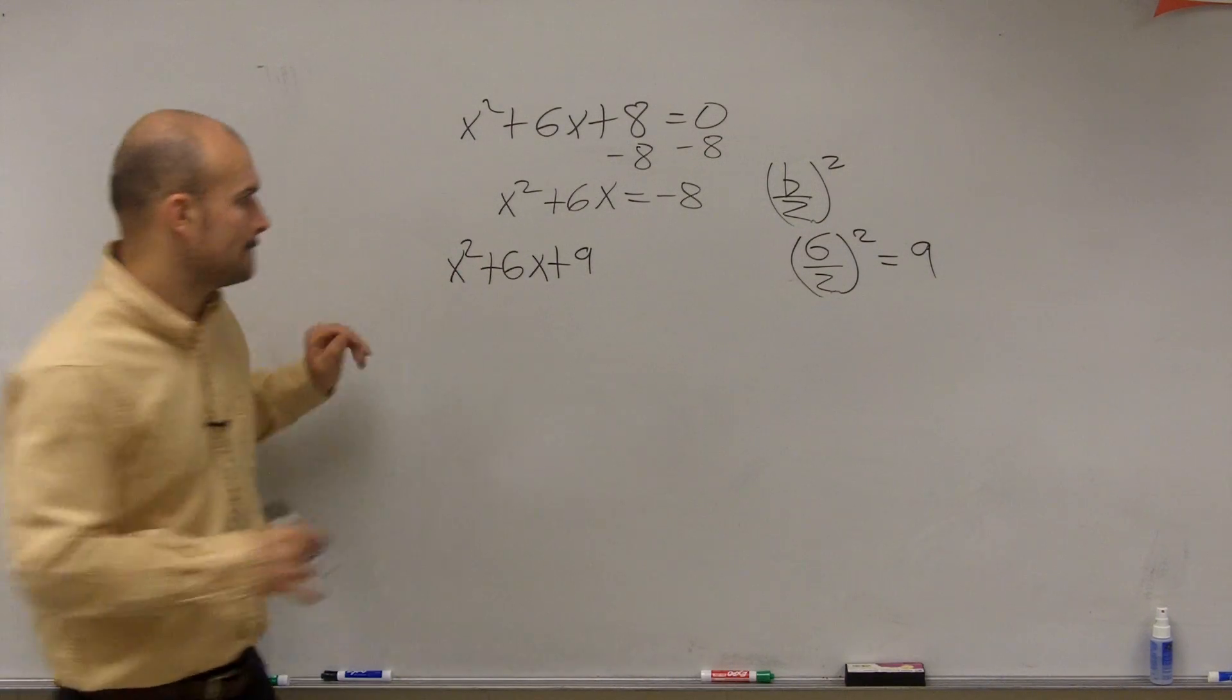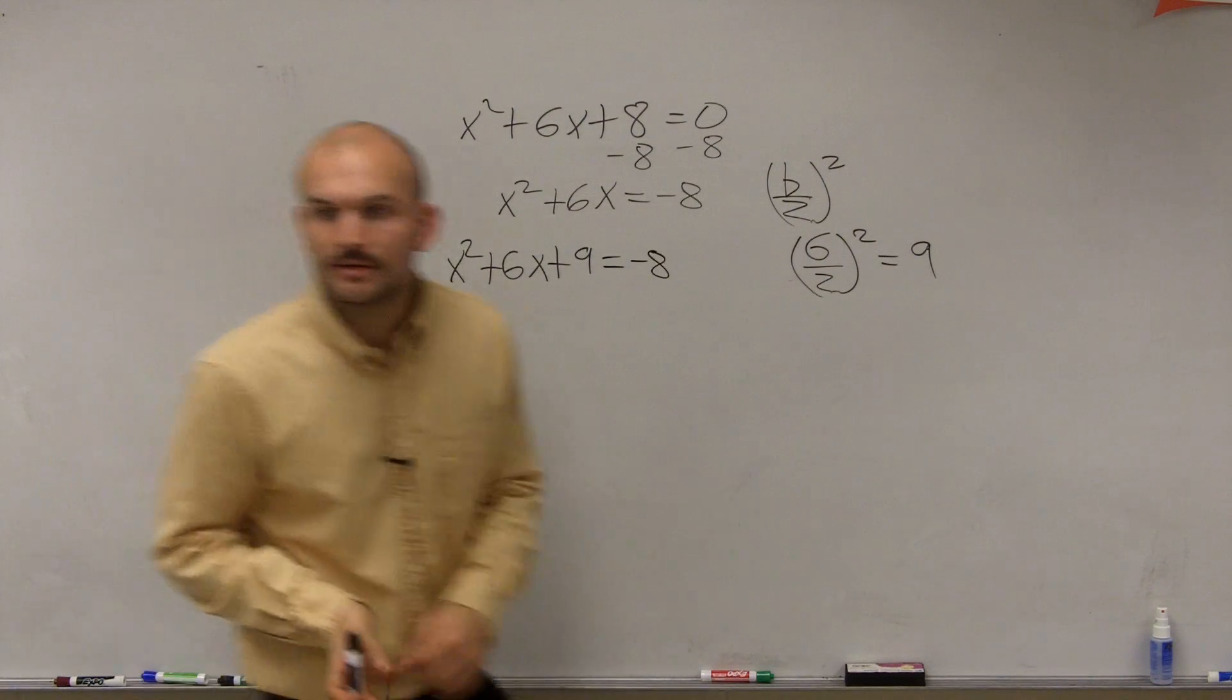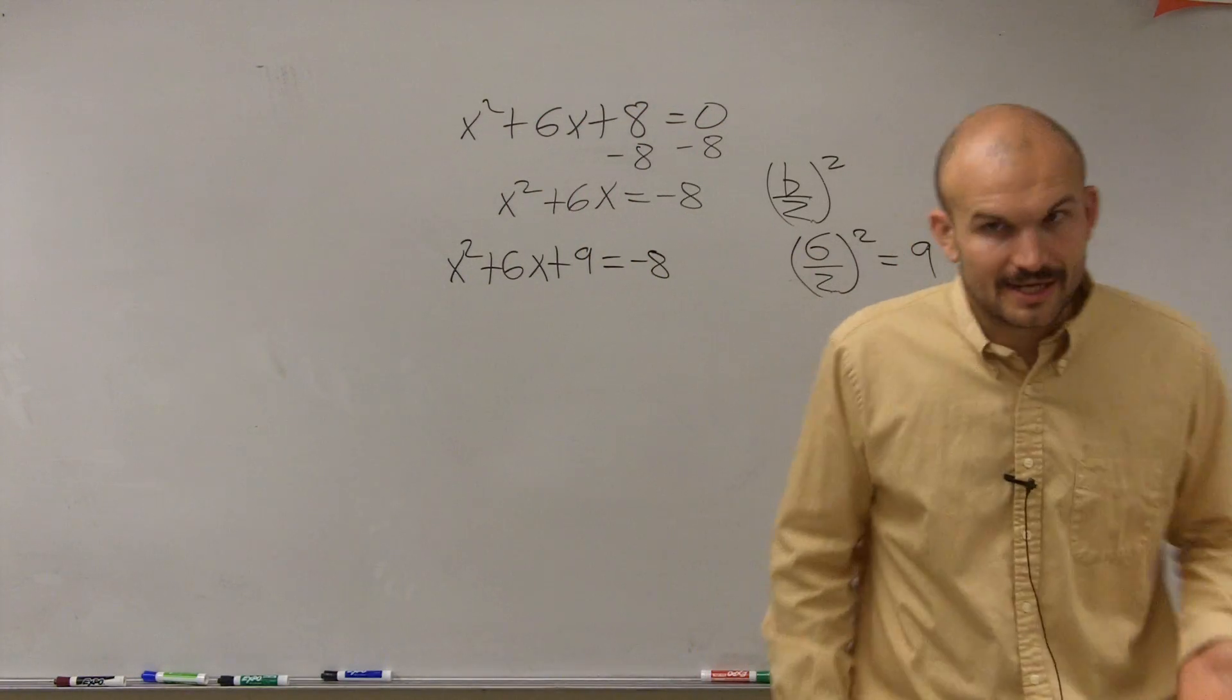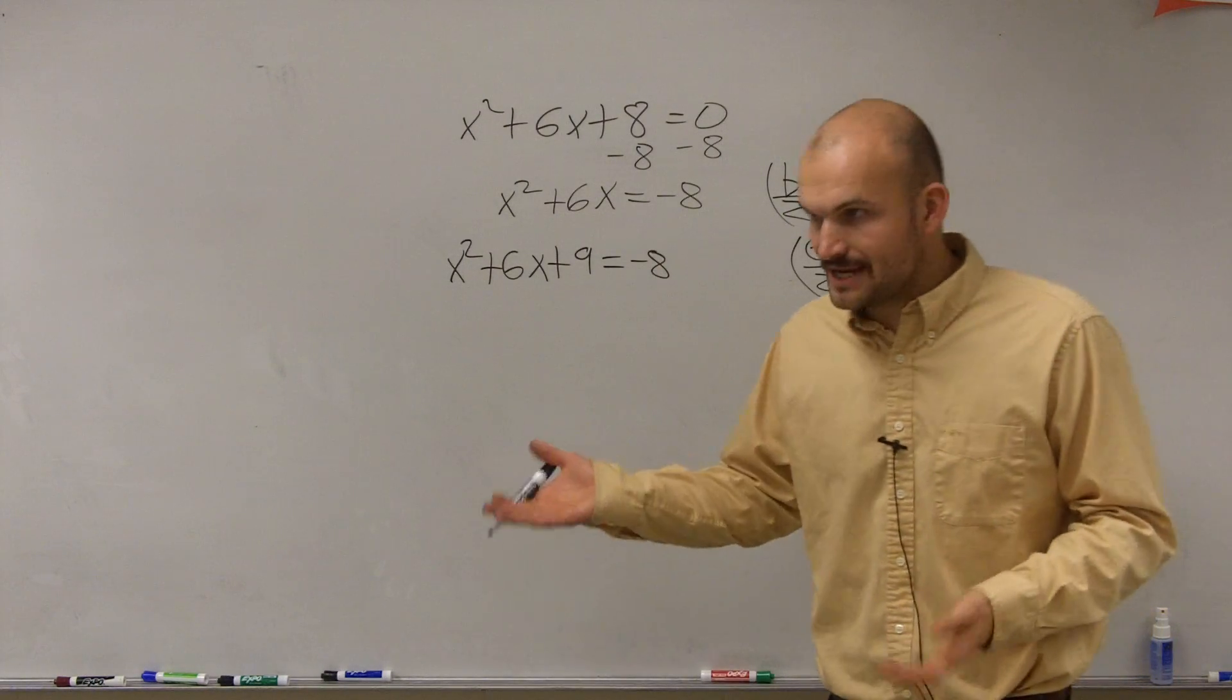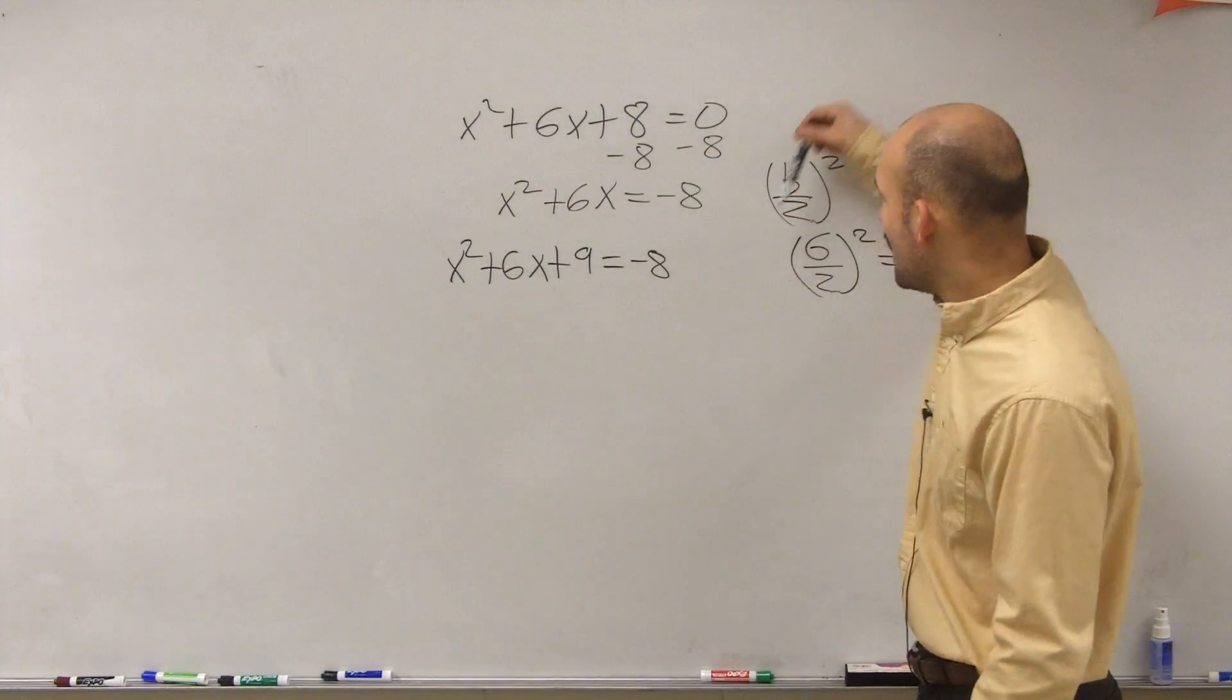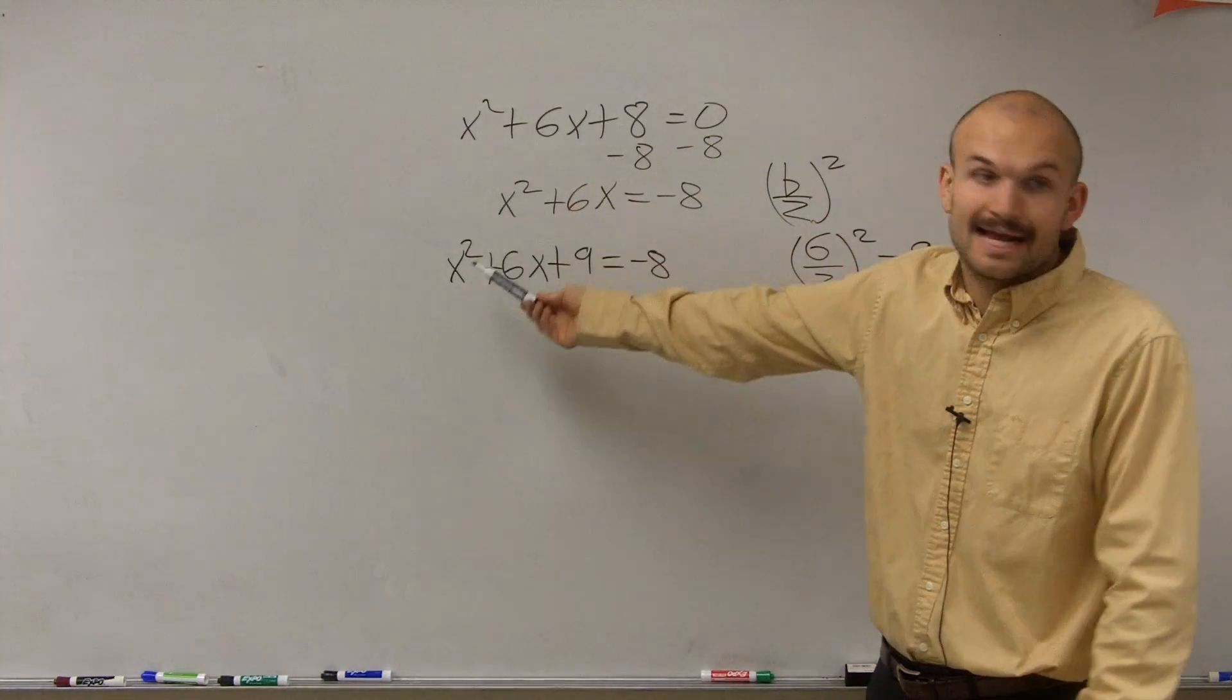Equals negative 8. But remember, an equation is a statement of equality. That means the left side is always equal to the right side. So I did this b divided by 2 to find the value that makes this a perfect square, and I added it to the left side.